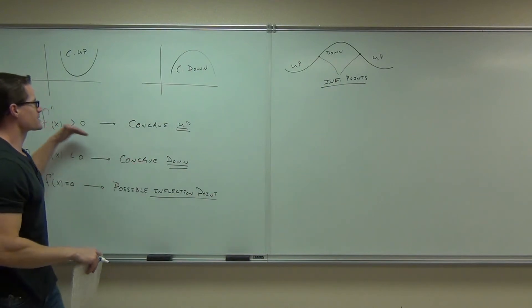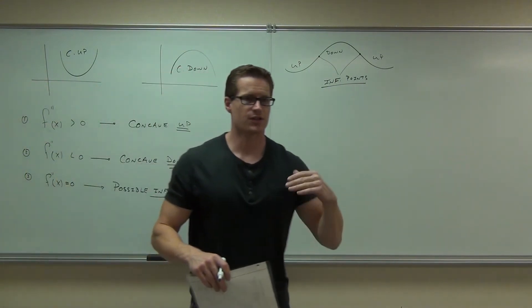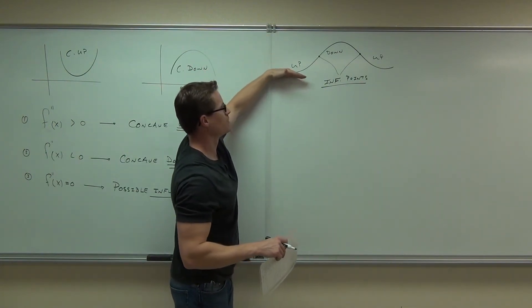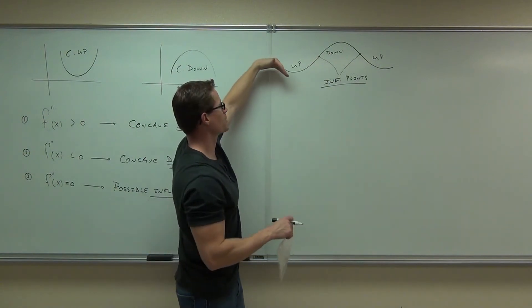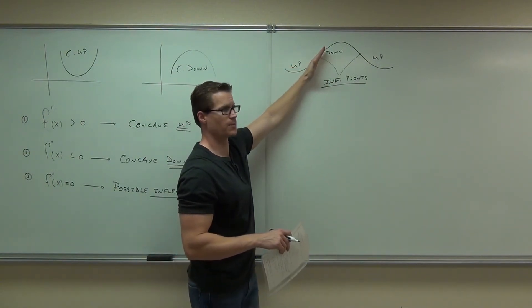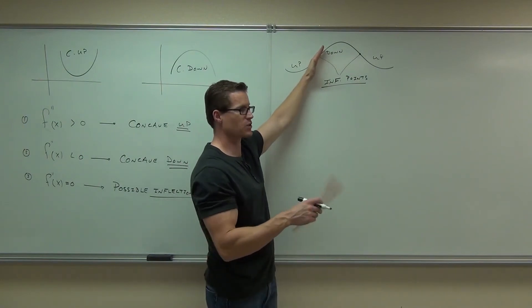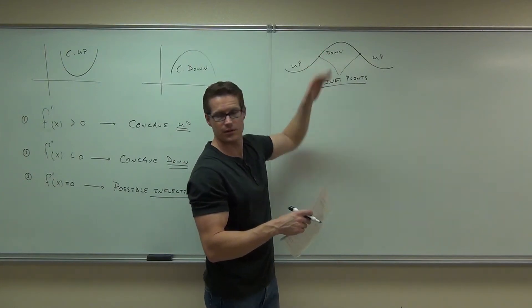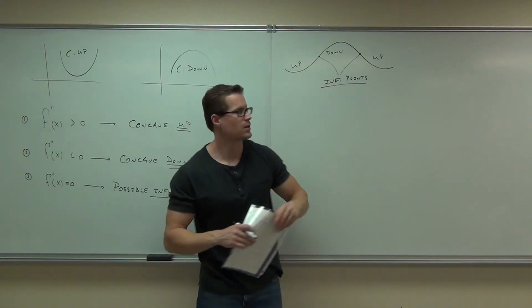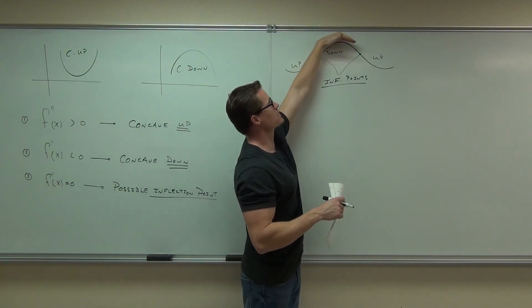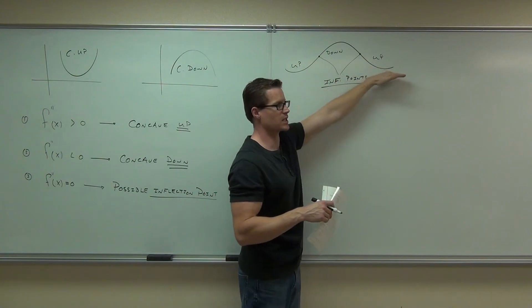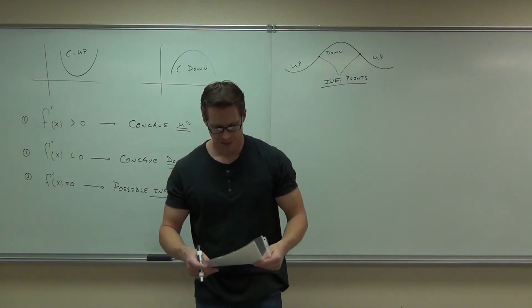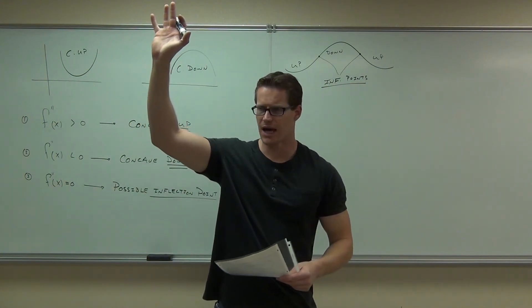Looking at the concave up region: the second derivative should be positive, meaning the slope is increasing. Is the slope increasing here? Sure, until it gets to that inflection point. At that point it stops increasing and starts decreasing — our slope hits a peak and falls back down. Then our slope is decreasing until it hits the next inflection point and starts increasing again. At those inflection points, that's where your second derivative equals zero.